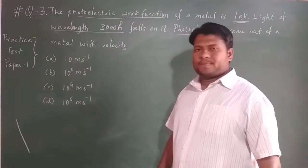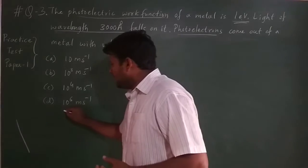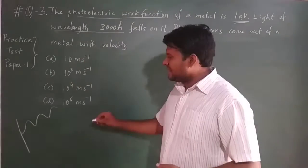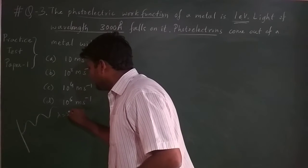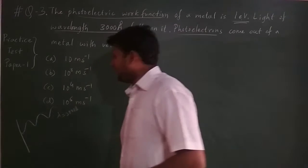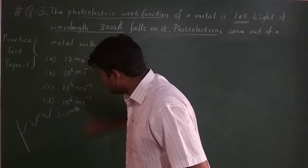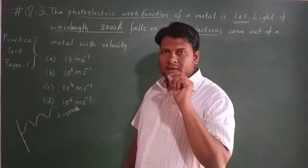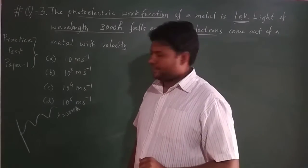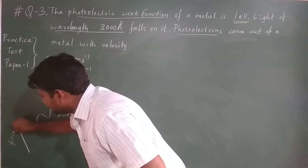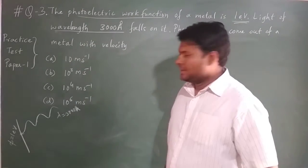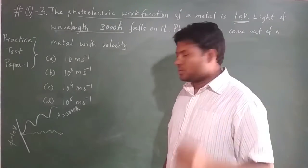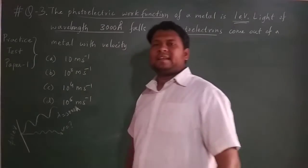I am going to describe the story in a very brief way. A metallic sheet has a light wave falling on it with a wavelength of 3000 angstrom. At the point of falling of this wave on the metallic plate, the plate does its work function of 1 electron volt, and emits back a photoelectron. We are going to find out the velocity of these photoelectrons.